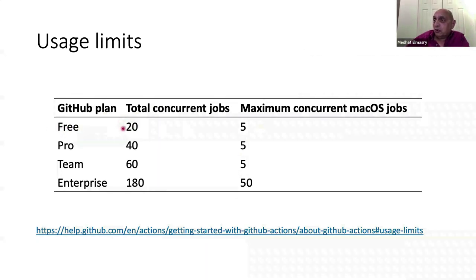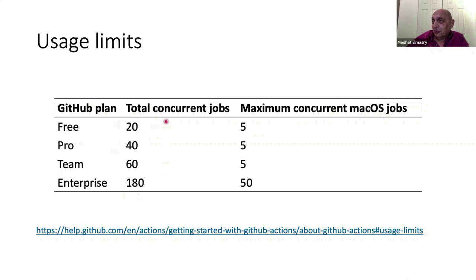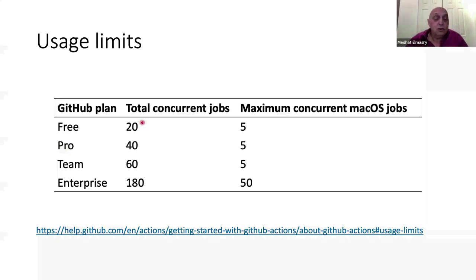For the free tier you can do 20 concurrent jobs, or 5 concurrent jobs targeting macOS. There are also paid tiers — the Pro tier, Team tier, and Enterprise tier. For most purposes, like when you're evaluating this product or its capabilities, the free tier is more than enough.